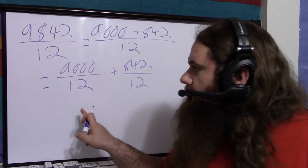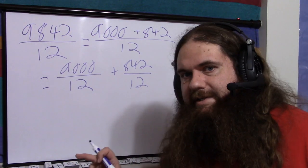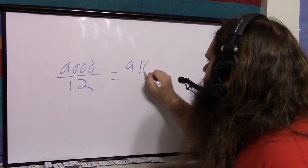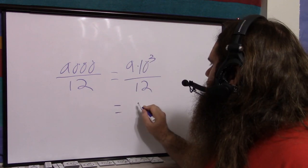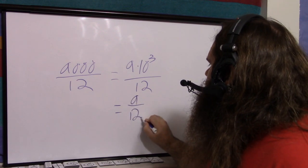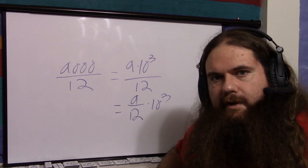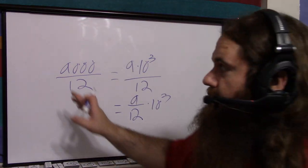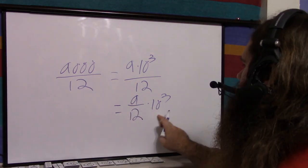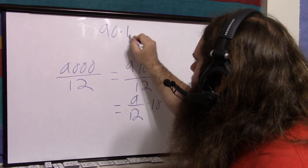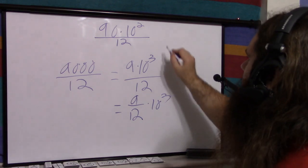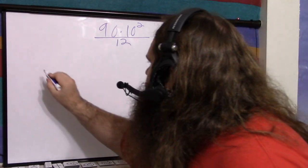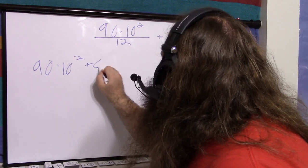Let's just worry about this 9,000. Remember how I said how many times does 12 go into 9? It's not as easy to see how many times 12 goes into 9,000. But if I say 9 times 10 to the 3 over 12, now we can split it as 9 over 12 times 10 to the 3. Well, 9 over 12 — we don't get any 12s out of that. So that's why I wrote a 0 in the 10 to the 3rd place. But now I want to bring it down to the next order of magnitude. 9 times 10 to the 3 is 90 times 10 to the 2, and this is over 12. And then we also had the 842 over 12, so we're back to our full operation: 90 times 10 to the 2 plus 842 over 12.